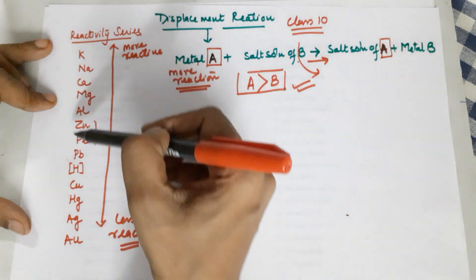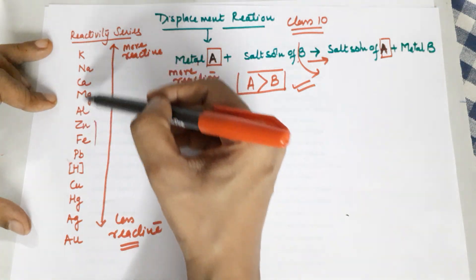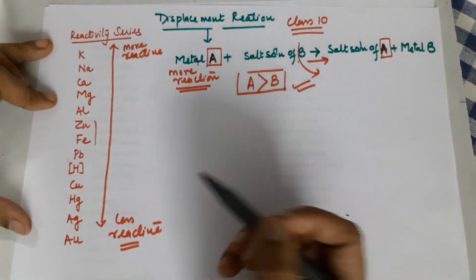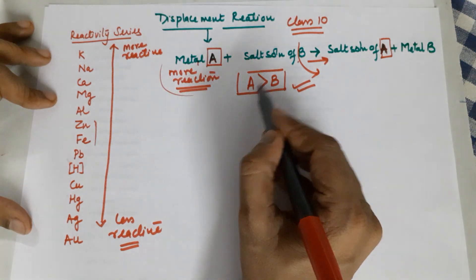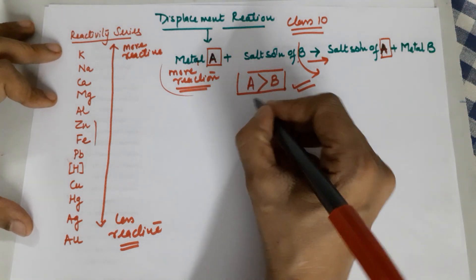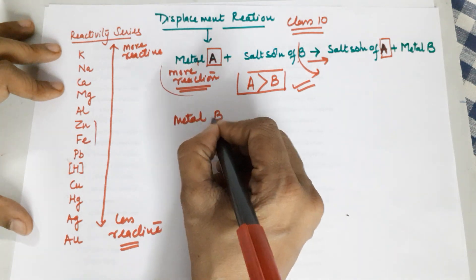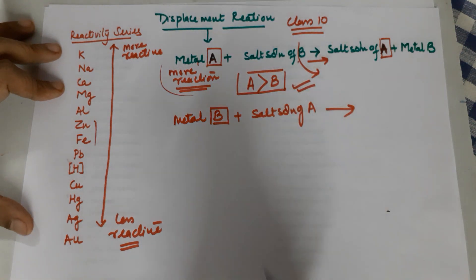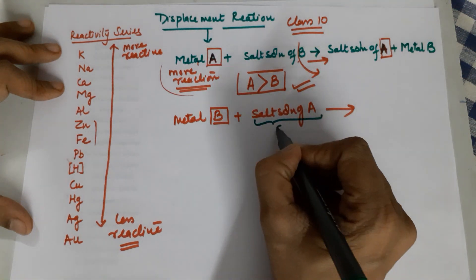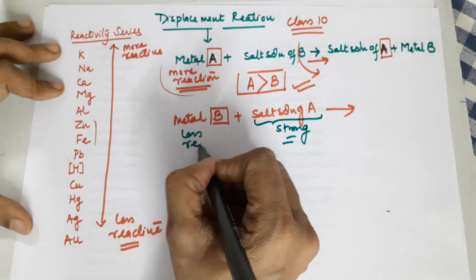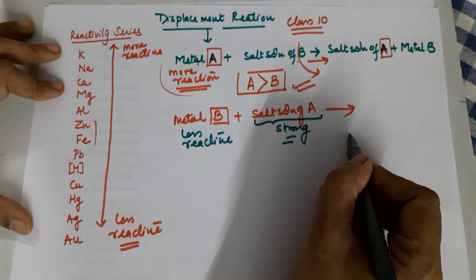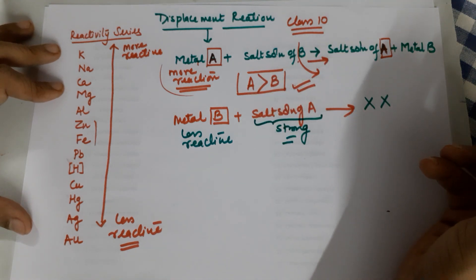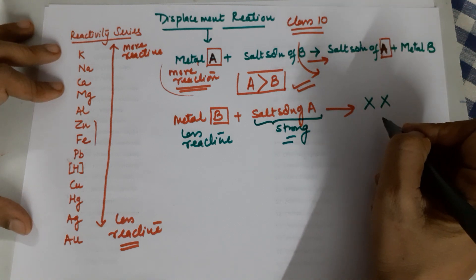Because those top metals are more reactive than the bottom ones. But if the salt solution is for the more reactive metals and you add less reactive metals to them, there won't be any reaction — the metal needs to be more reactive than the metal in the salt solution. If metal A is more reactive and you add metal B to the salt solution of A, metal B will not be able to remove A. There will be no reaction, no displacement happening.